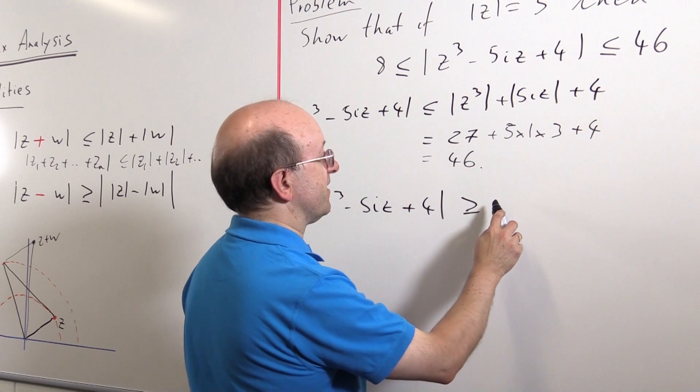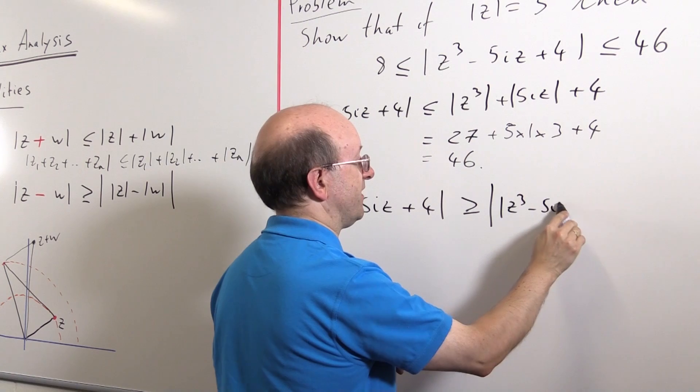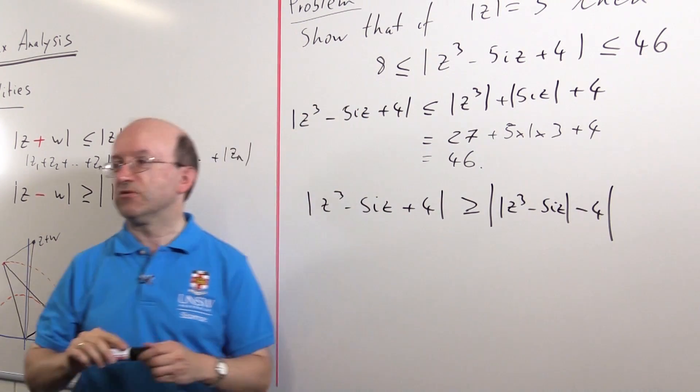So I'm going to write this this way. This thing is greater than or equal to the absolute value of z cubed minus 5i z minus the absolute value of 4. Well, that's just 4, of course.